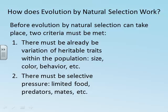Before natural selection can occur, two criteria must be met. First, the population must already have variation in one or more heritable traits. Examples of heritable traits are size, color, and certain behaviors.